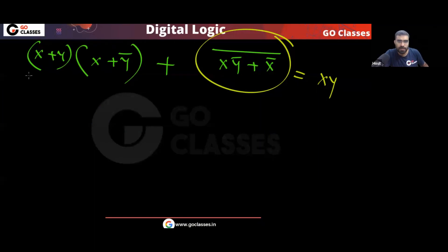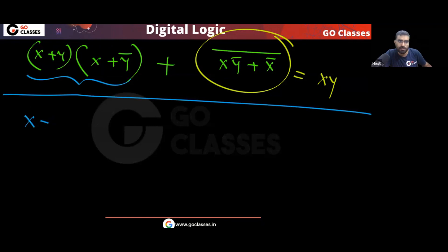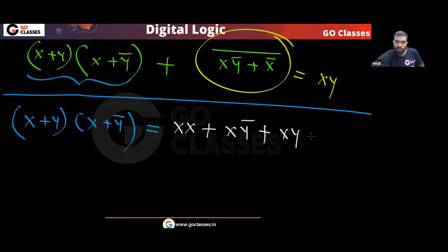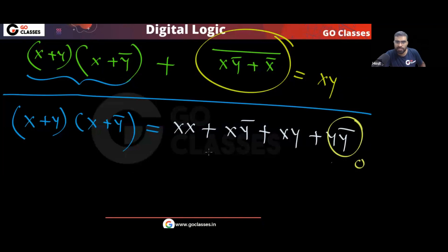Now let's focus on the other part: (X + Y)(X + Ȳ). Applying the distributive property — multiplying out — you get X·X + X·Ȳ + X·Y + Y·Ȳ. X·X is X, and Y·Ȳ is zero. So you are left with X + X·Ȳ + X·Y.